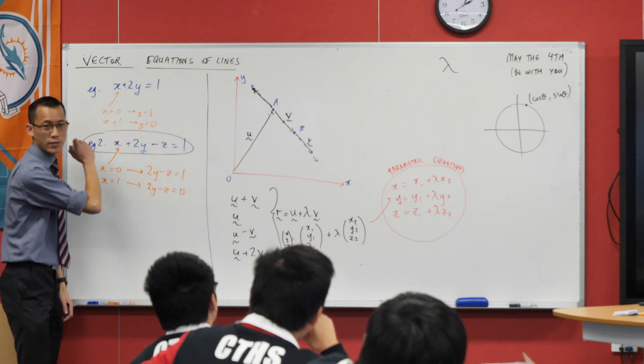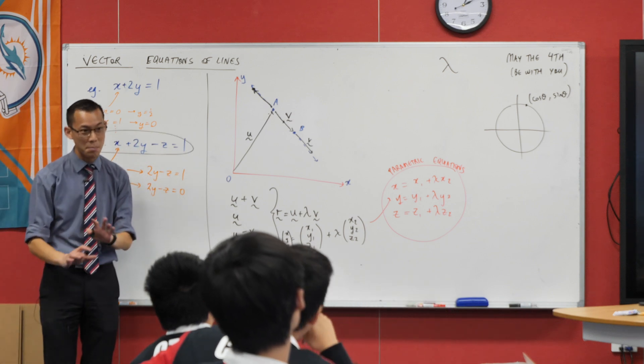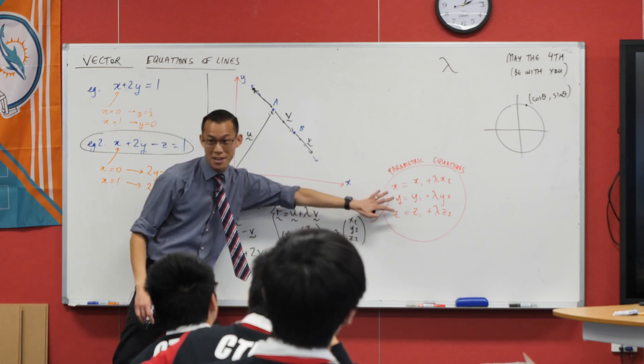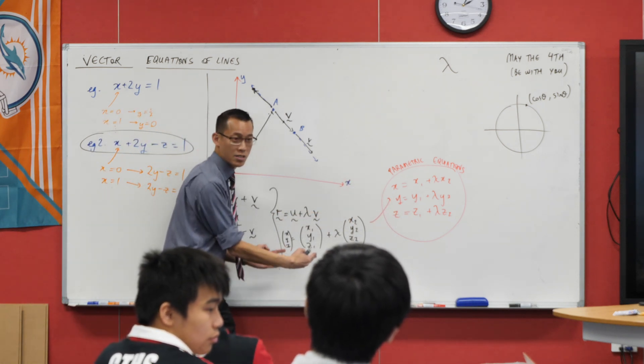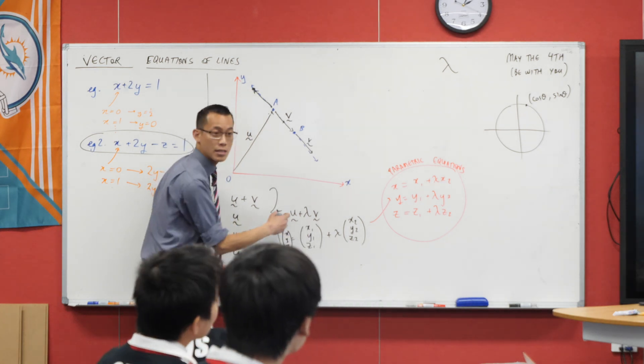So we shouldn't be that surprised that this here didn't work to give us a line because it was a vastly underpowered tool. You really need three equations which mathematicians being lazy they combine into one and we write in this very succinct way.